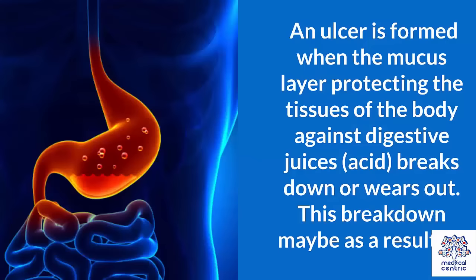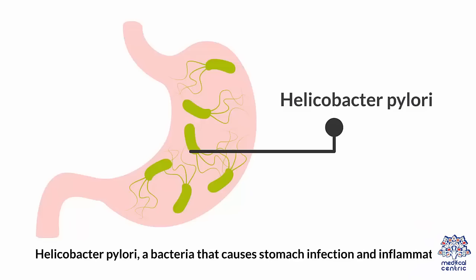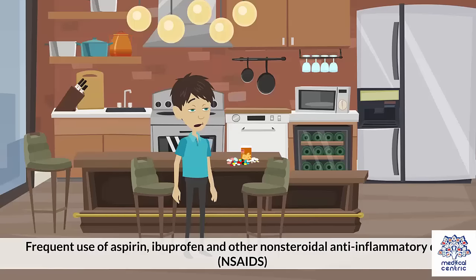Causes. An ulcer is formed when the mucus layer protecting the tissues of the body against digestive juices or acid breaks down or wears out. This breakdown may be as a result of Helicobacter pylori, a bacteria that causes stomach infection and inflammation.